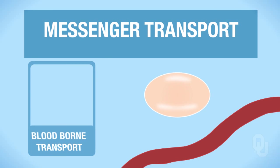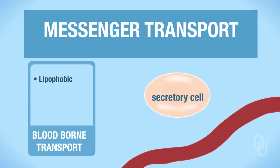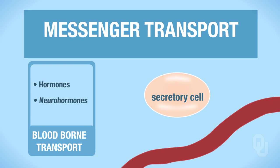Bloodborne transport, on the other hand, is a little more complicated, and it's going to be dependent upon whether the ligand is lipophobic or lipophilic. Bloodborne transport occurs when the secretory cell and the target cell are far away — in other words, long distance communication. And that's what's occurring when we have hormones and neurohormones as our ligands.